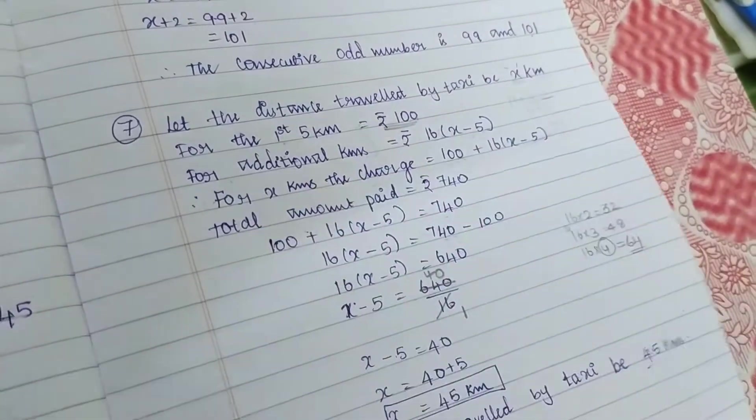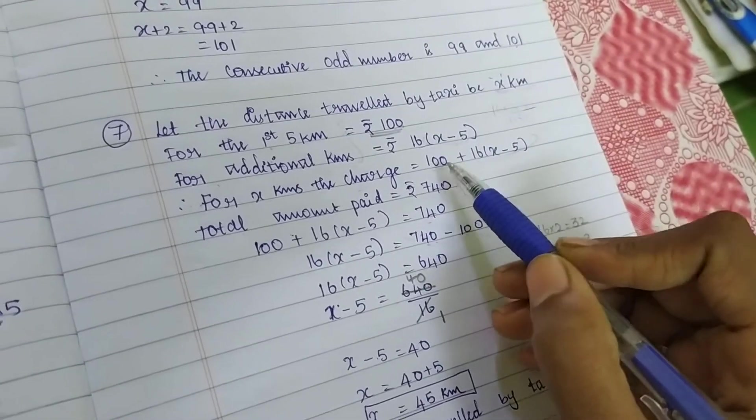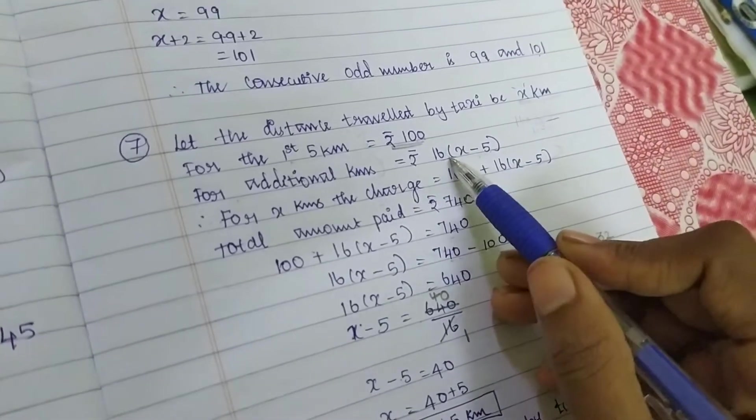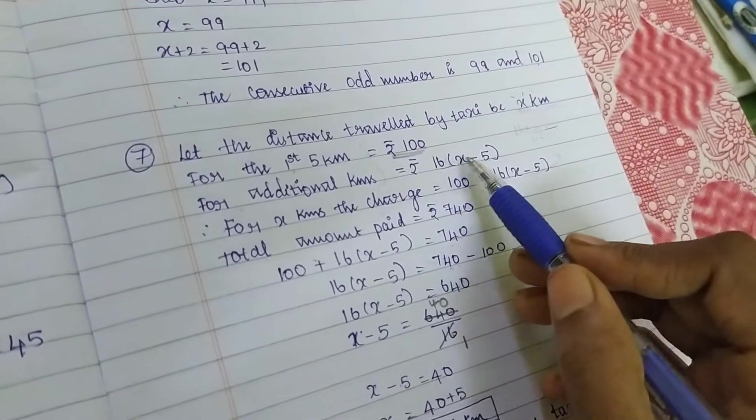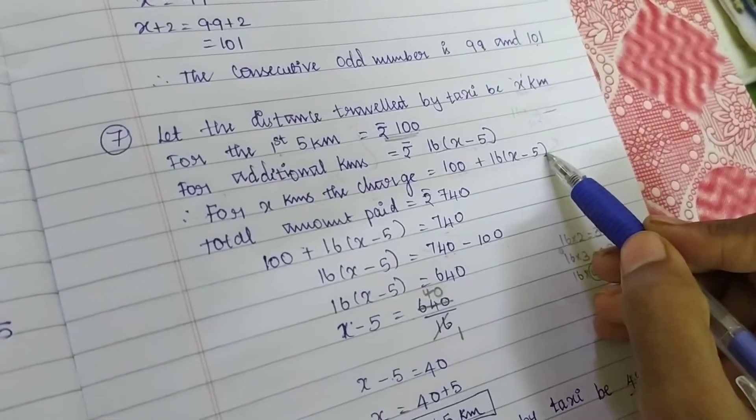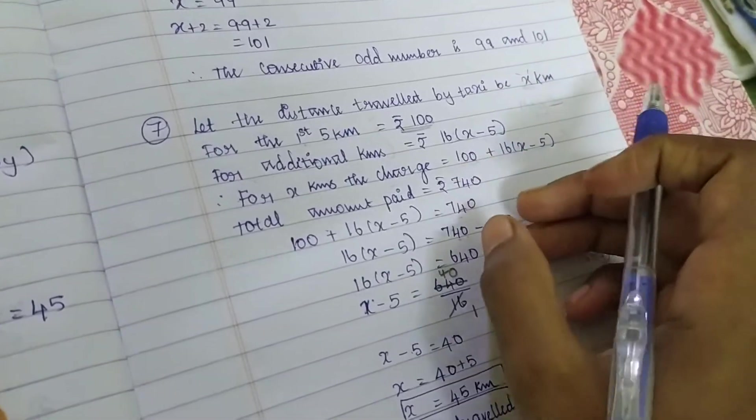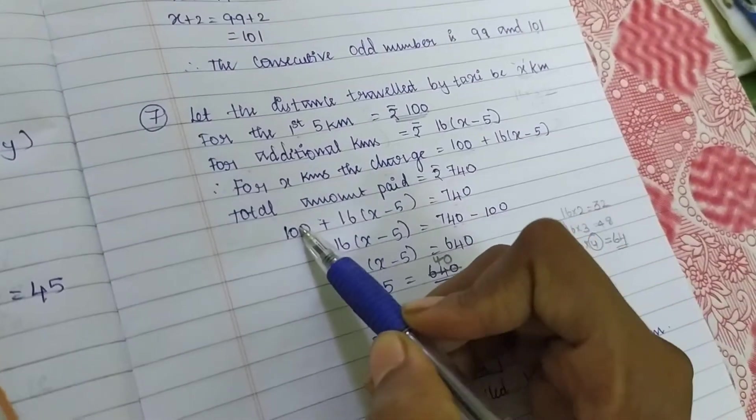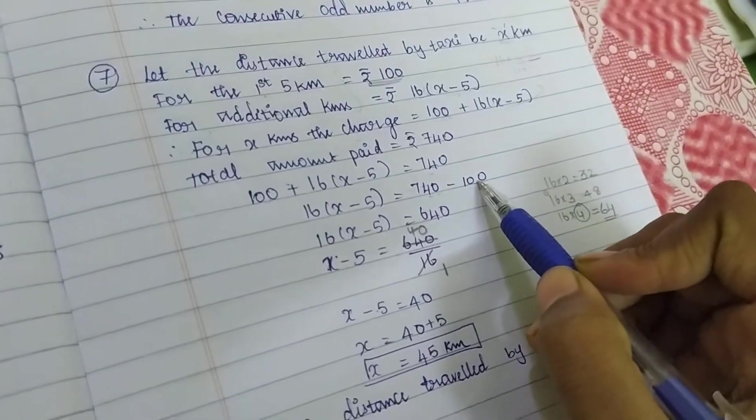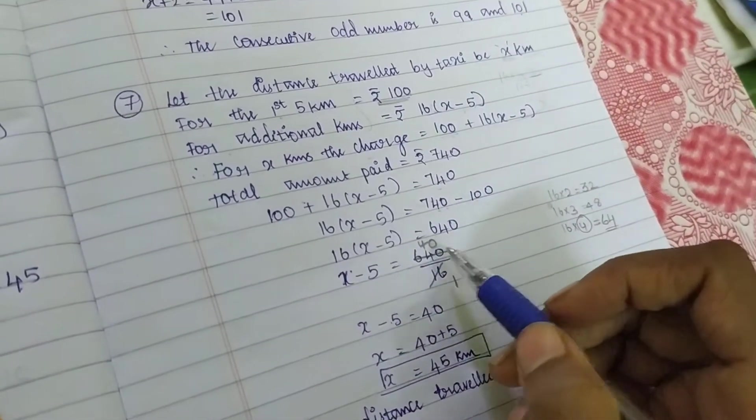For X kilometer charge - what is the charge? What is the amount they given? 100 plus 16 into that distance. Then we can find out. So 16 is X minus 5. They already mentioned the total amount they paid. So this is equal to this. This 100 is moving this place, negative 100. So 16X minus 5 equals 640.